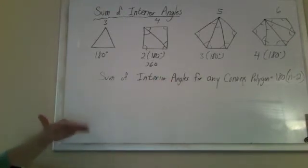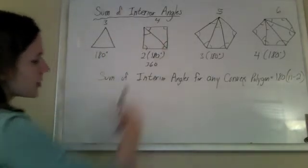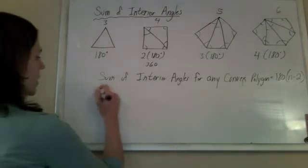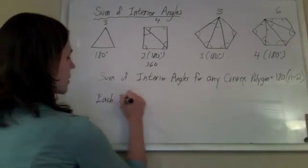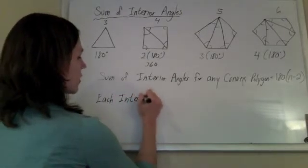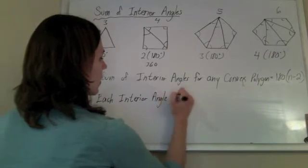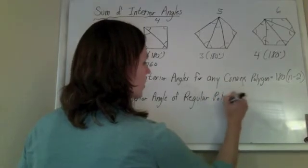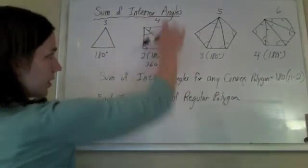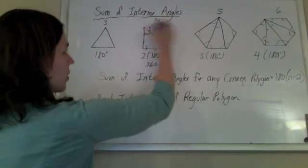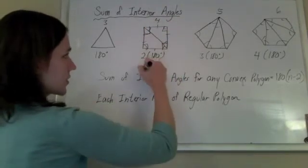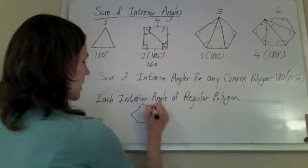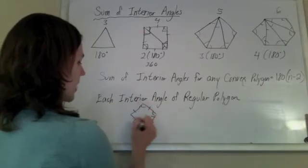Now, some of the problems don't want the sum of all the interior angles. Some are just concerned about one angle. So if you want each interior angle of a regular polygon - and regular just means that it has all the same sides and all the same angles - a regular pentagon would look something like that, with all the same sides and all the same angles.